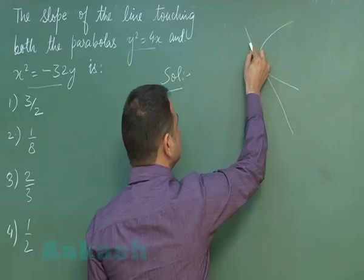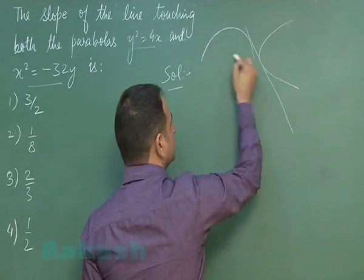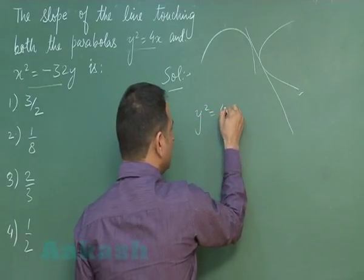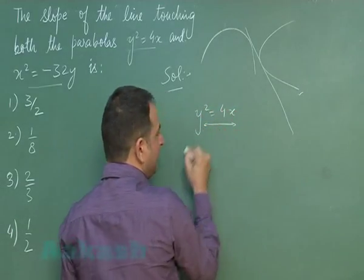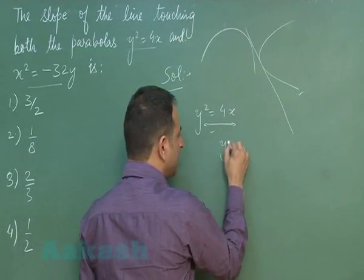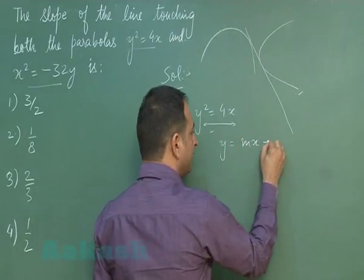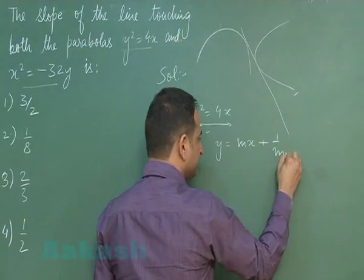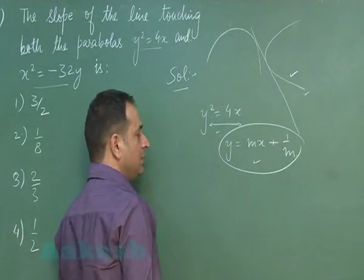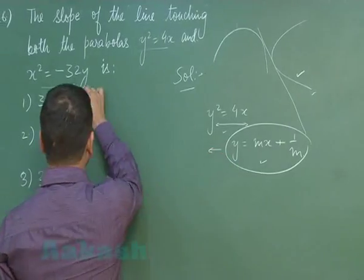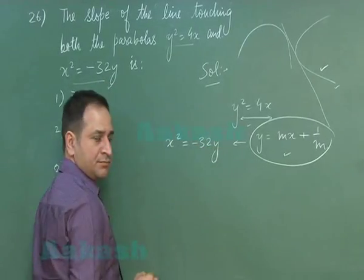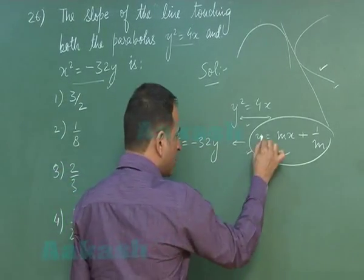This is one parabola and this is another parabola. For the first parabola y² = 4x, any line which touches it — that is, which is a tangent to this parabola — can be written as y = mx + 1/m. This line is a tangent to the first parabola, and it also touches the second parabola x² = -32y.